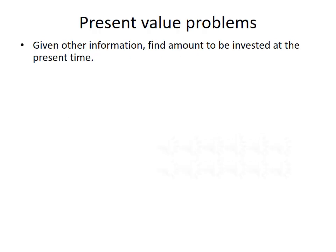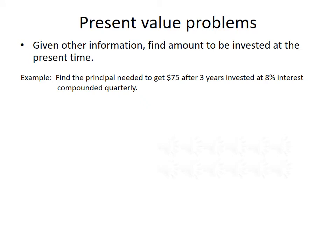Now we're going to use the same formulas to solve a different type of problem called present value problems. Given other information, we want to find the amount that would need to be invested — that is, find the principal at the present time. Our first example: find the principal needed to get $75 after three years invested at 8% interest compounded quarterly. Since the interest is compounded quarterly, we'll use the compound interest formula. P is our unknown, and A is equal to 75.